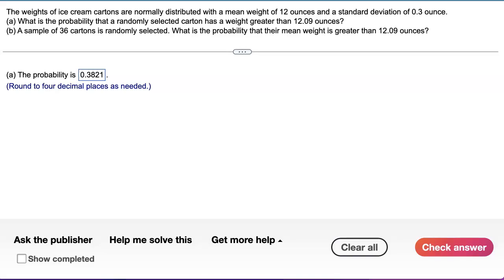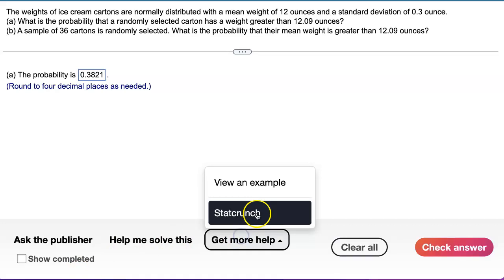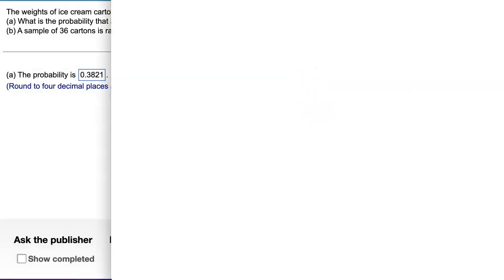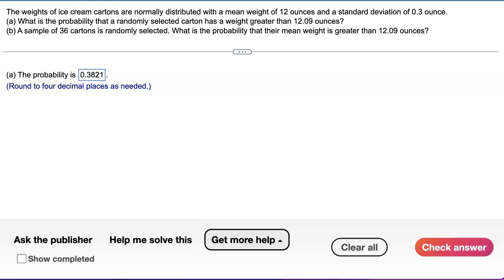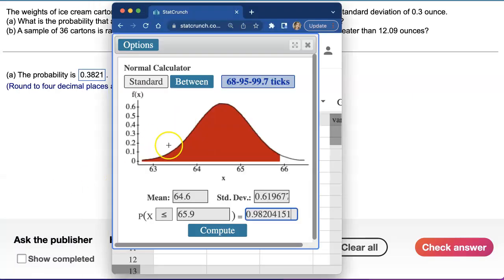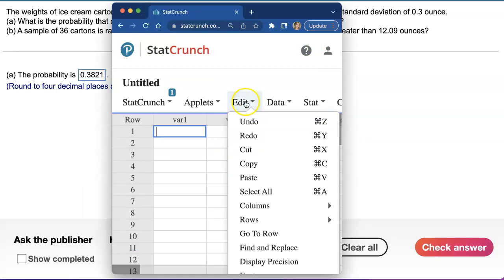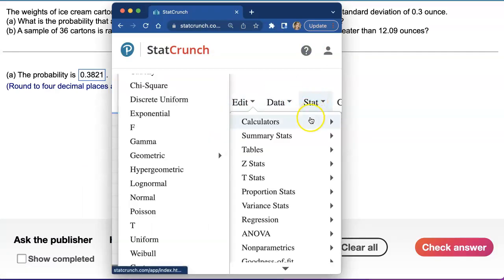The weights of ice cream cartons are normally distributed with a mean weight of 12 ounces and a standard deviation of 0.3 ounces. We can open up normal calculator for this, so you go to stat, calculate, normal calculator.